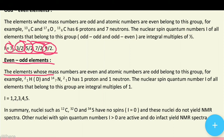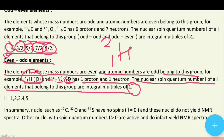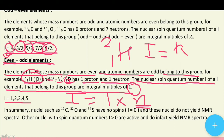Even-odd elements: the elements whose mass number is even and atomic number is odd belong to this group. For example, hydrogen-2 (deuterium, D): mass number 2 (even), atomic number 1 (odd) — 1 proton and 1 neutron. Nitrogen-14 is also in this group. The nuclear spin quantum number I for all elements in this group are integral multiples of one: I = N × 1, where N is any integer (1, 2, 3, 4, 5...).